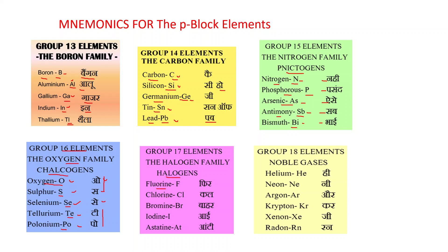For group 17 (halogens) — fluorine (F), chlorine (Cl), bromine (Br), iodine (I), astatine (At) — the mnemonic is: 'Fear Cal Bahar, I Aunty' → F, Cl, Br, I, At. For group 18 (noble gases) — helium (He), neon (Ne), argon (Ar), krypton (Kr), xenon (Xe), radon (Rn) — the mnemonic is: 'He Ne Ar kar, G Kr Xe run' → He, Ne, Ar, Kr, Xe, Rn. Please subscribe to the channel for new videos!